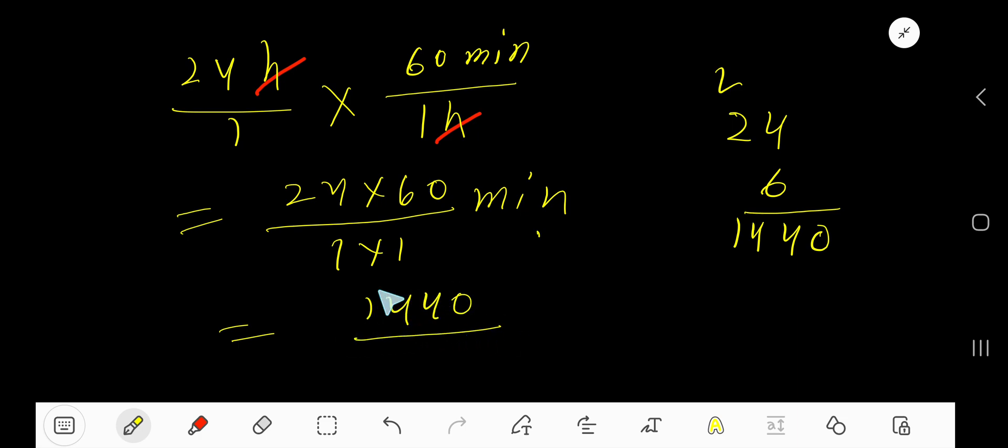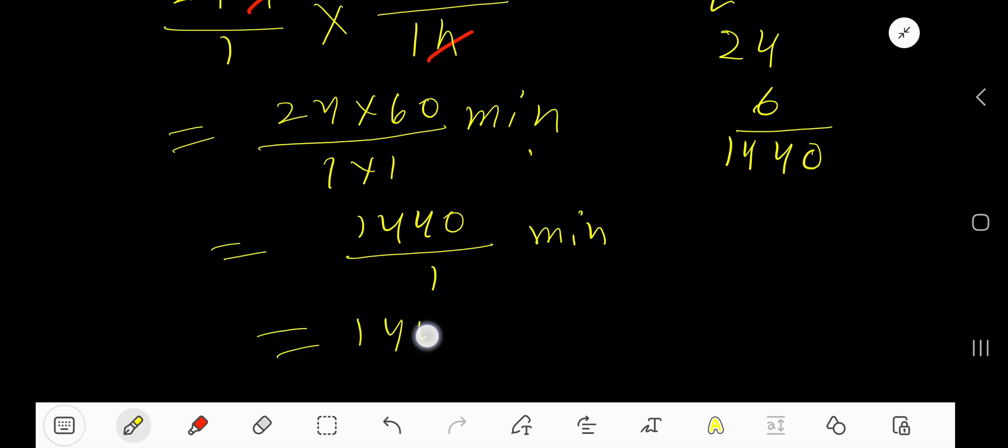So 1440 divided by 1 times 1 gives us minutes. Our answer is 1440 minutes.